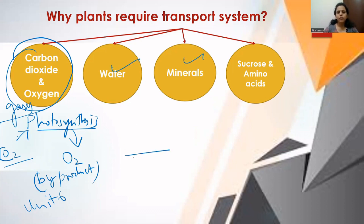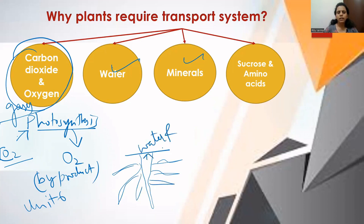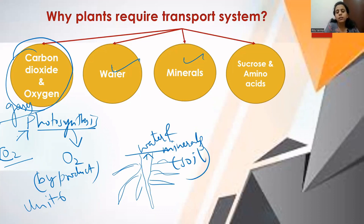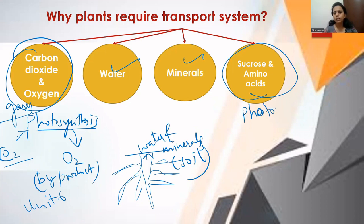The second reason is water and minerals. All plants have roots, and roots absorb water and minerals from the soil. The roots alone cannot consume or utilize the entire water and minerals — they have to share them with different parts of the plant. So water and minerals move from the roots to different parts of the plant with the help of the transport system.